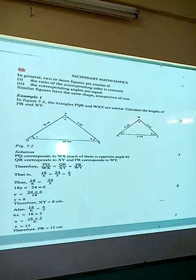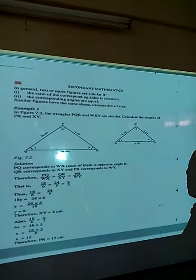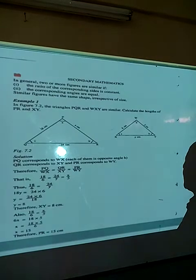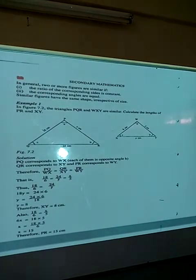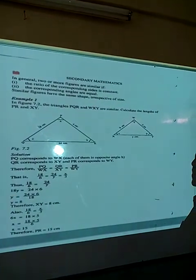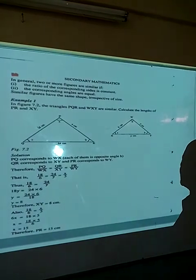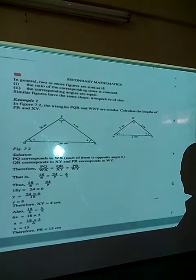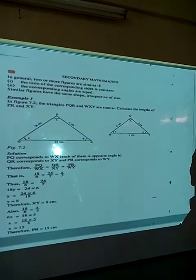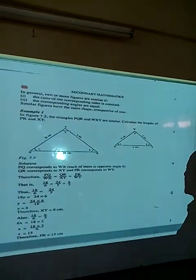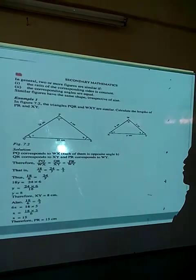Therefore, when we take the ratio of the corresponding sides: PQ over WX equals QR over XY, which equals PR over WY. Substituting the known values, we have 18 over 6 equals 24 over Y.